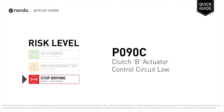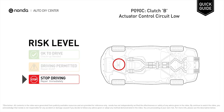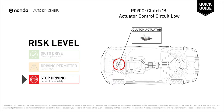P090C is a diagnostic trouble code for Clutch B Actuator Control Circuit Low. Under this circumstance, stop driving and repair your vehicle immediately. It indicates that there is a low voltage situation with the clutch actuator.